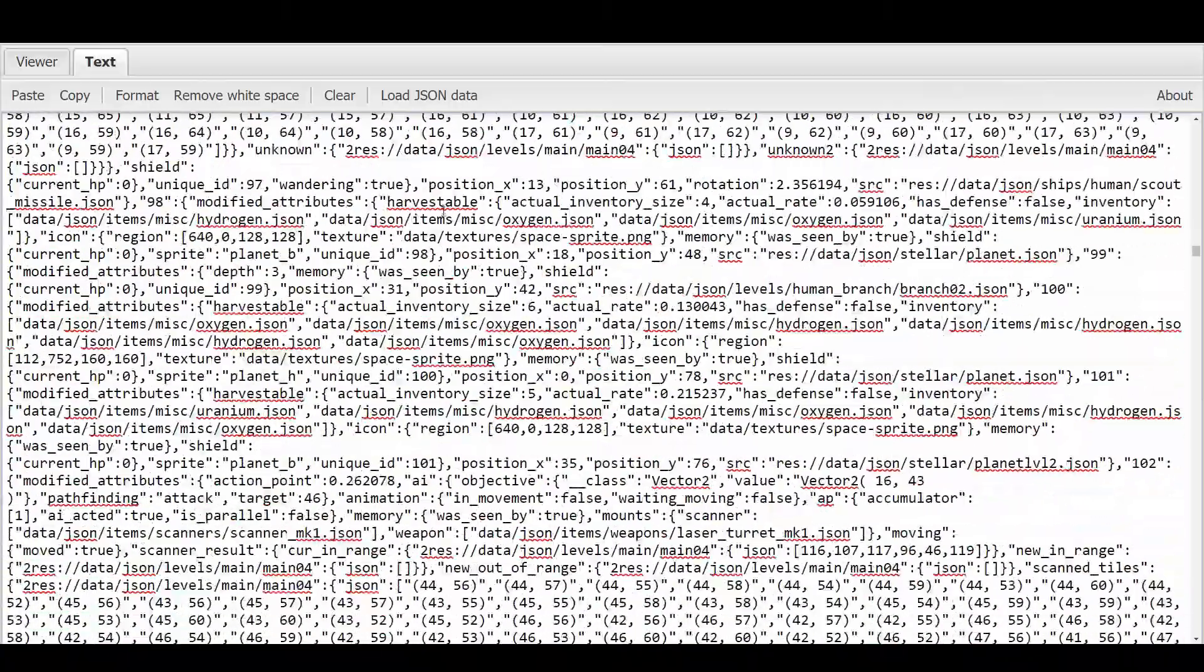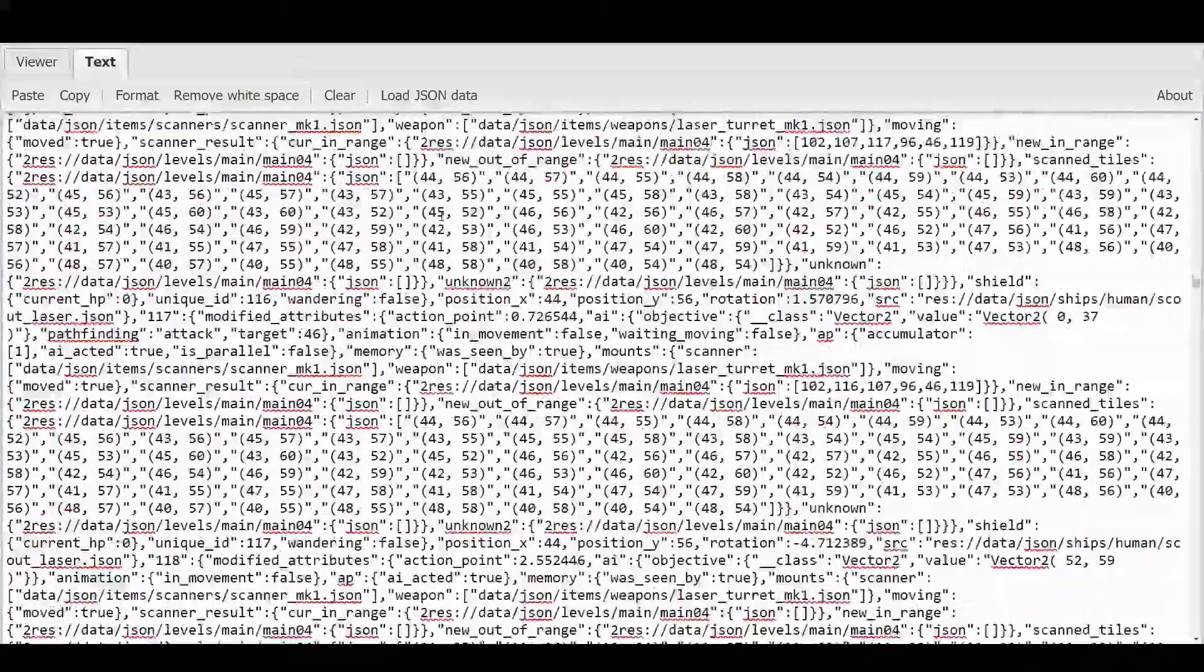But in my opinion binarizing the data is useful for other stuff beside just reducing the size of your save file. For example it can be useful to try to encrypt the data so that it's harder to cheat, or you might want to binarize it in a format that will be faster to load for the computer so that you can reduce your load time.